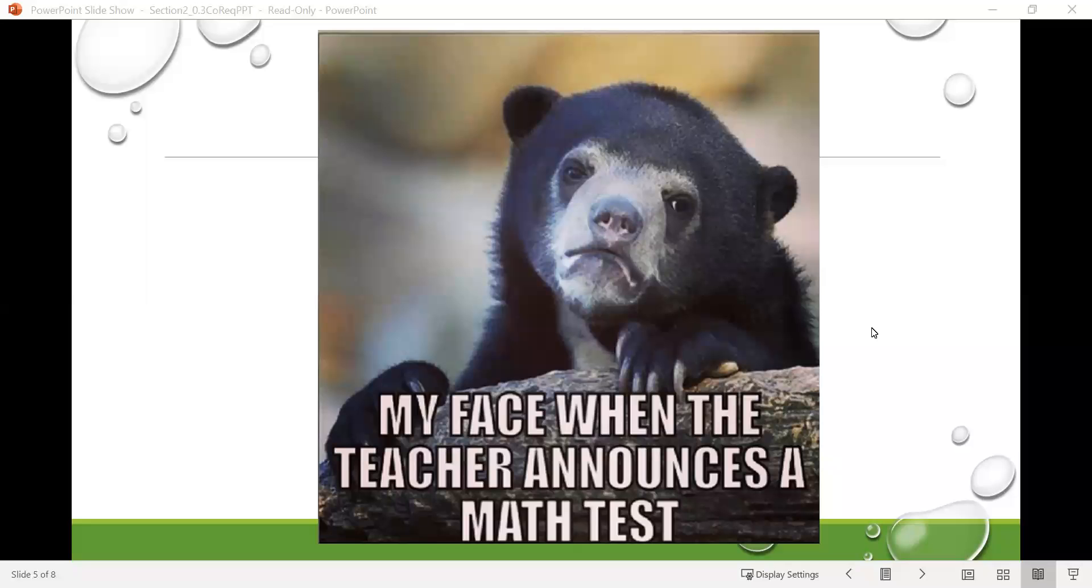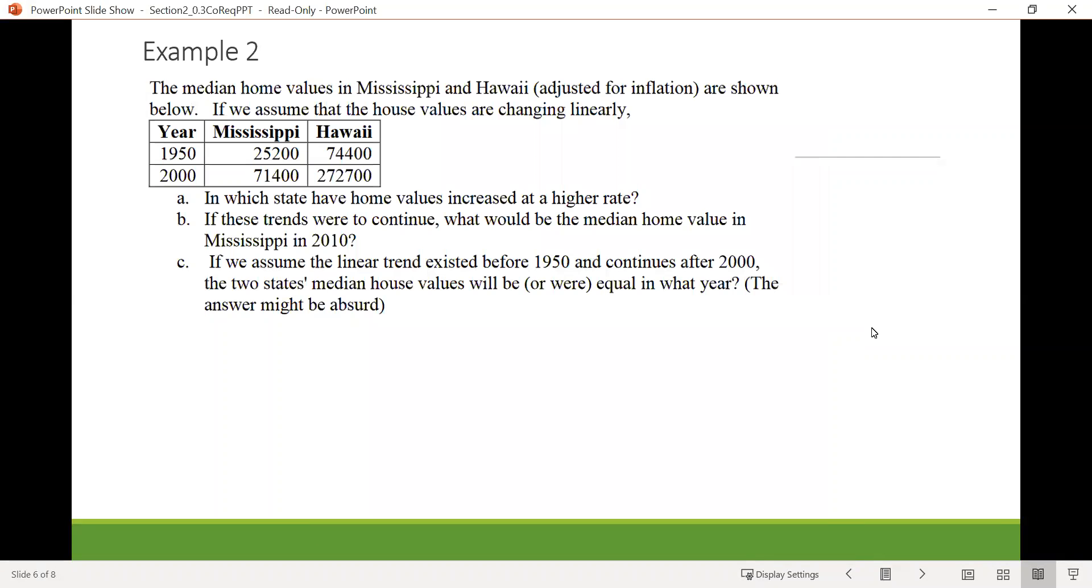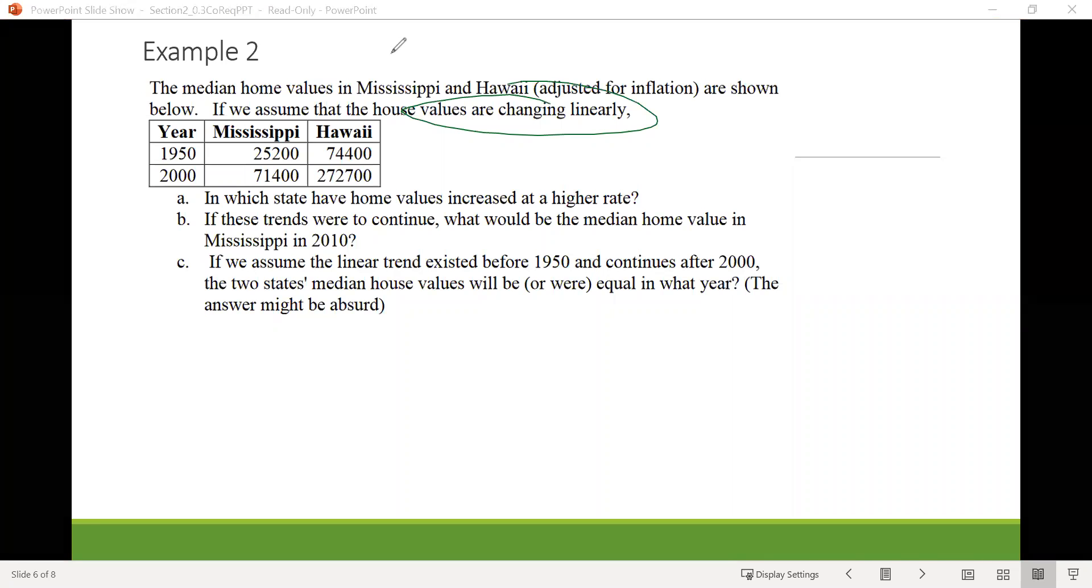All right everyone, welcome to the second part of the video for section 2.3, continuing on looking at some more examples of application type problems that involve linear functions. In this problem we're told that the medium home values in Mississippi and Hawaii adjusted for inflation are shown below. We're going to assume that these values change linearly, and you can see those values in the table there.